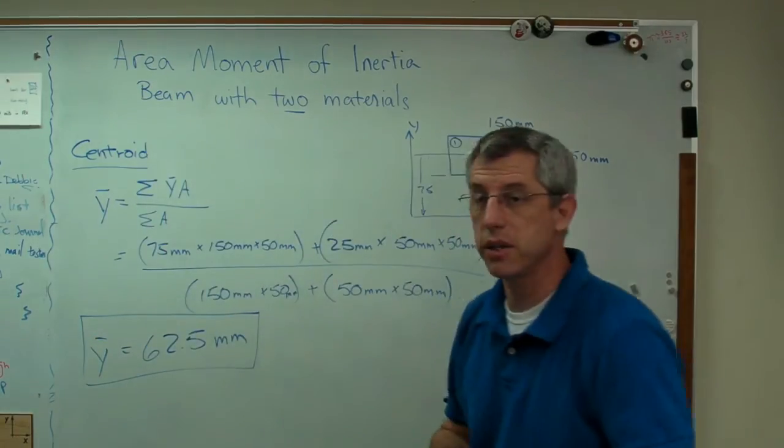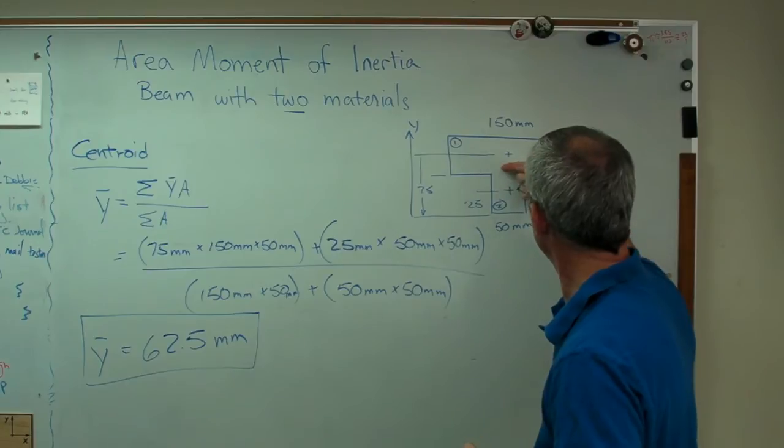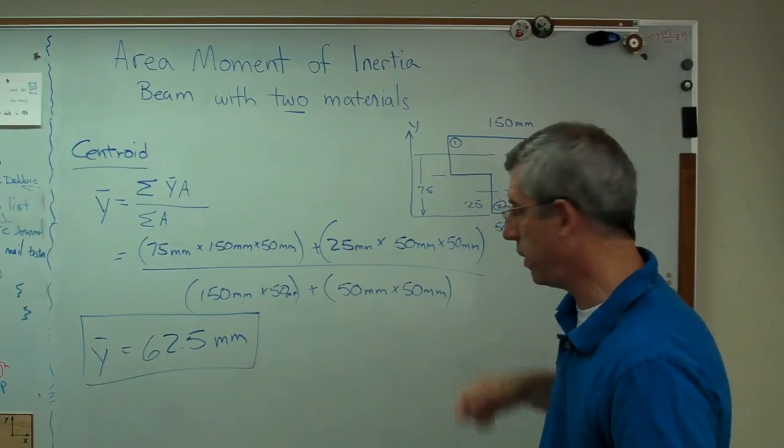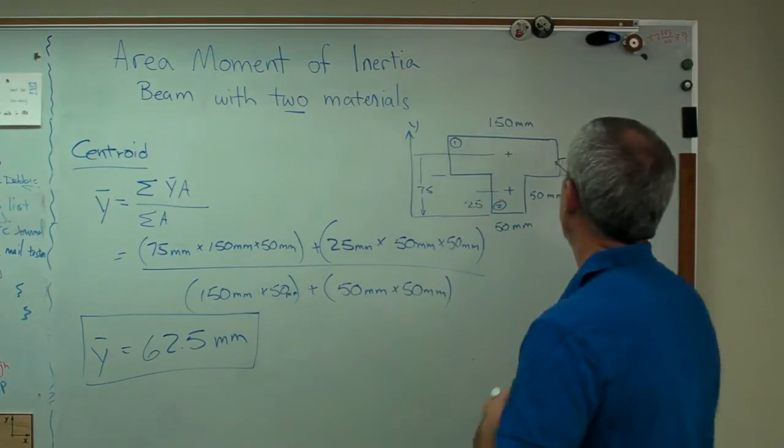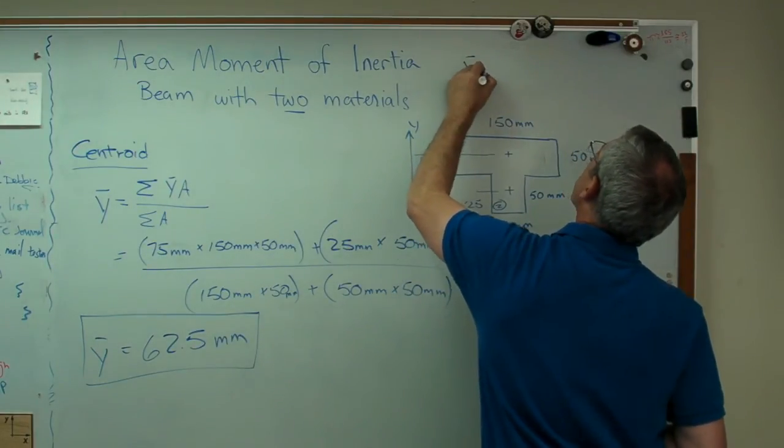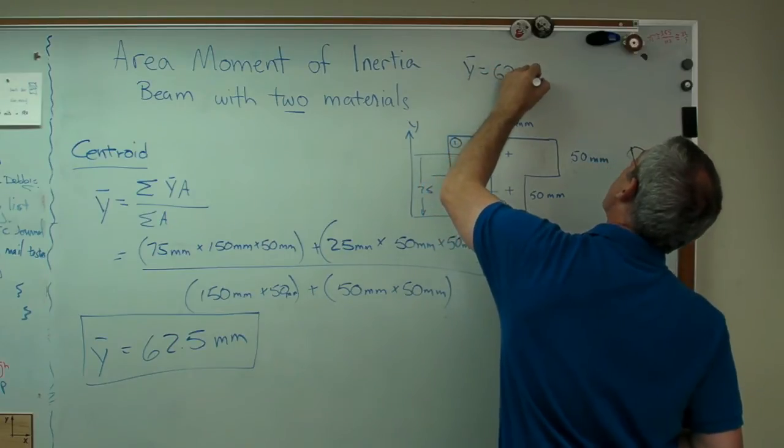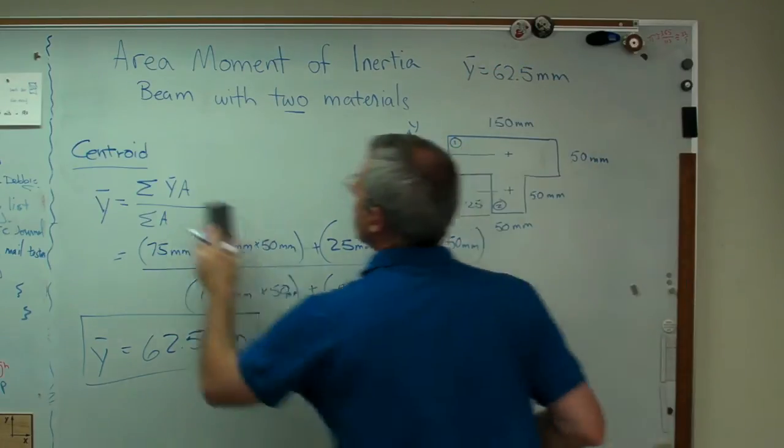And it's 62.5 millimeters is Y bar. That's good. That makes sense. It's between those two, a little bit above there. That's quite believable. Don't have any problems with that. So I got the centroid. I now know that Y bar is 62.5 millimeters.